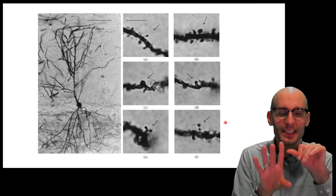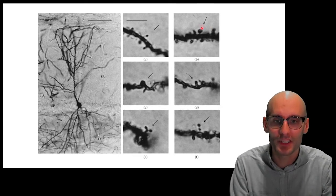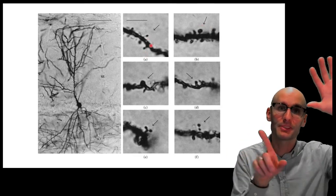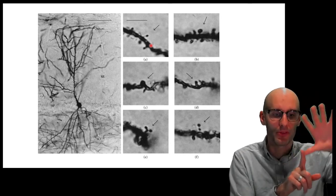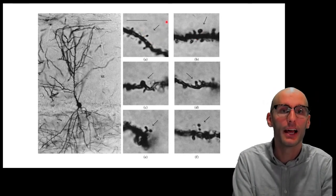And, critically, we see these dendritic spines here, these little blobs that stick off the dendrite. Each of those represents a connection between two things. So, here we've got the connection between two neurons.